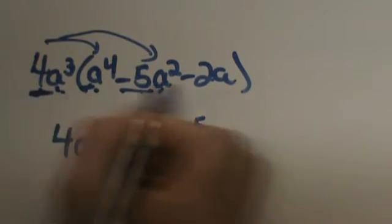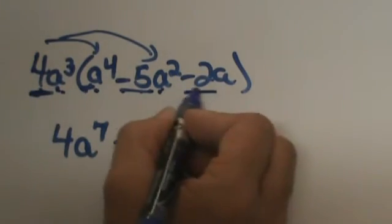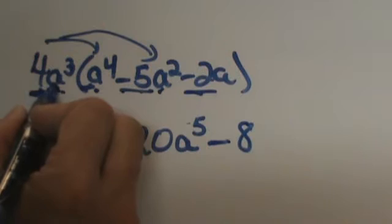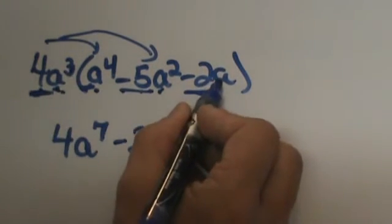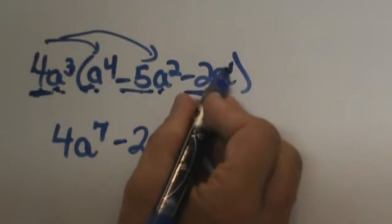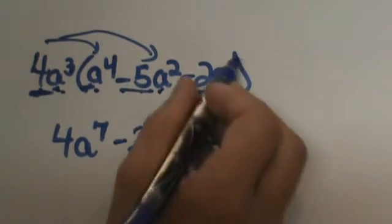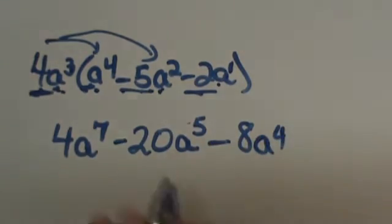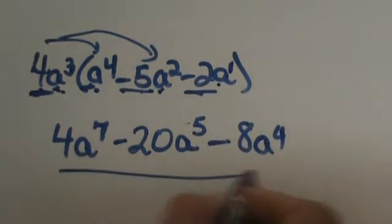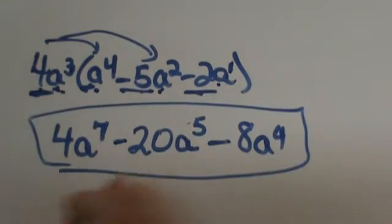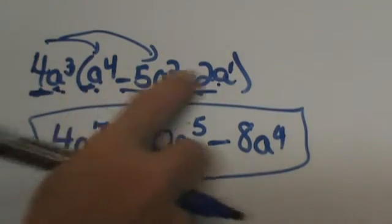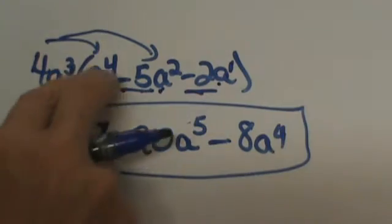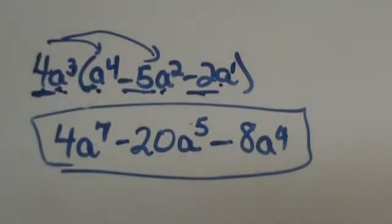The last term: 4 times negative 2 is negative 8, and a to the 3rd times a to the 1st — you can write the 1 there if that helps — gives a to the 4th. That is how you distribute and find the product of a monomial times a trinomial: multiply the coefficients and add the exponents.